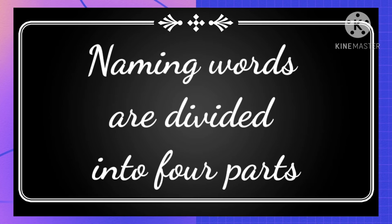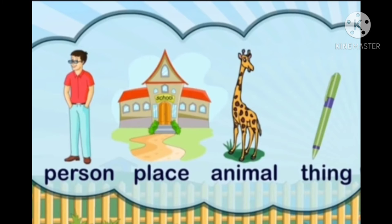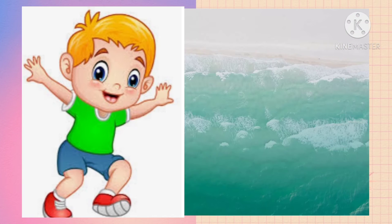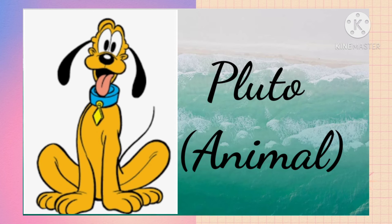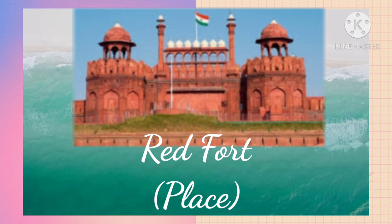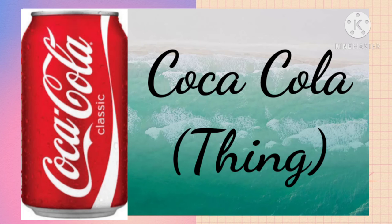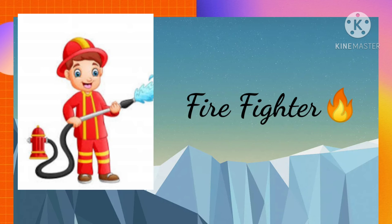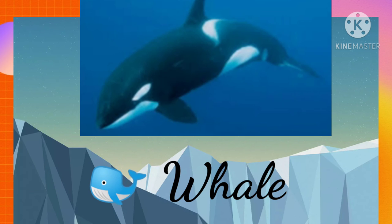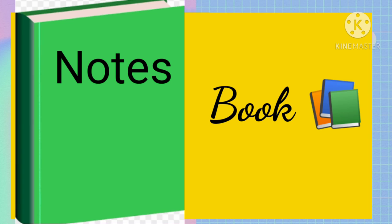Naming words are divided into four parts: person, animal, place, and thing. As you can see in the pictures — person: Ricky, animal: Pluto, place: Red Fort, thing: Coca Cola. Some more examples are firefighters, whale, kitchen, and book.